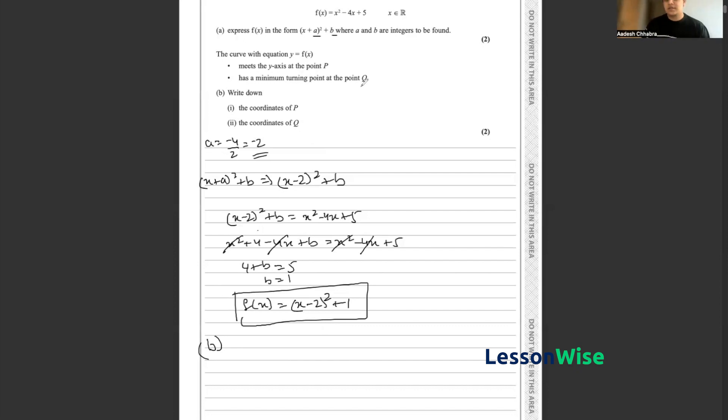So all we have to do is substitute x = 0 into the initial function. So we know that y = x² - 4x + 5.